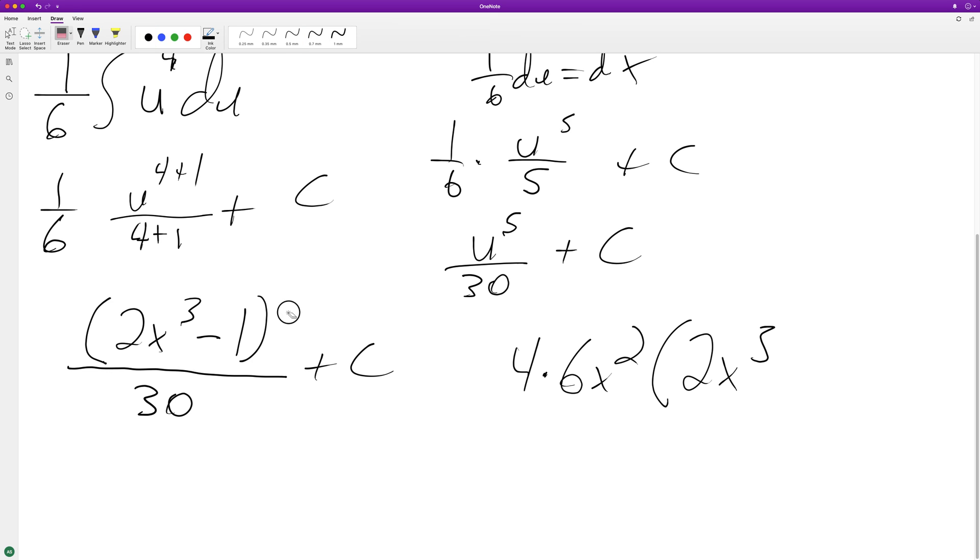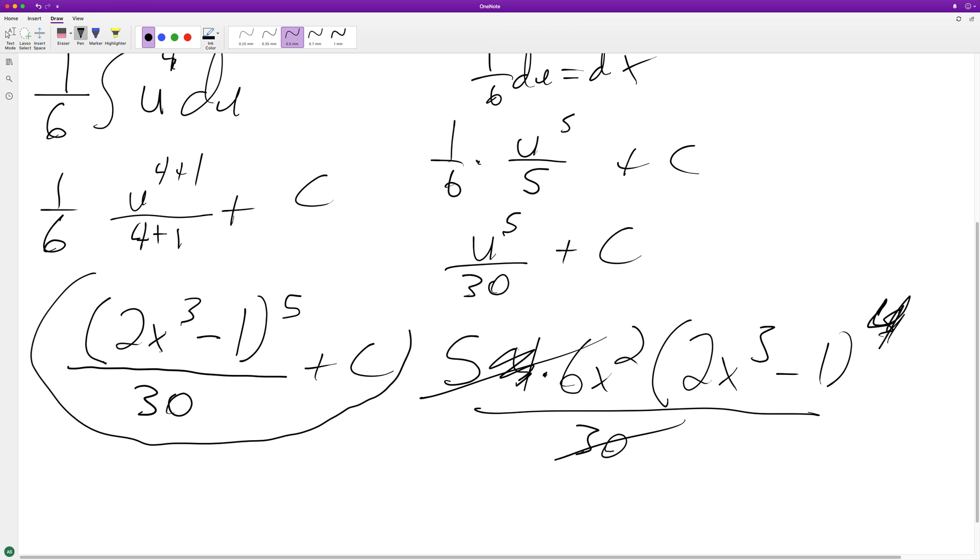No, sorry, this should be a 5. I goofed. And then the 30 on the bottom. So we have x squared and quantity 2x cubed minus 1 raised to the 4th. So that matches up. So this means that this integration here is correct.